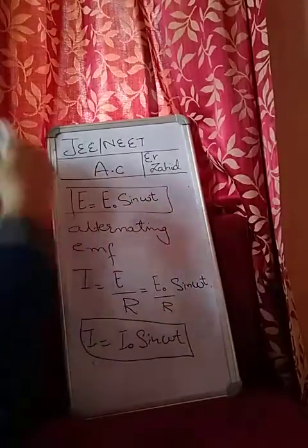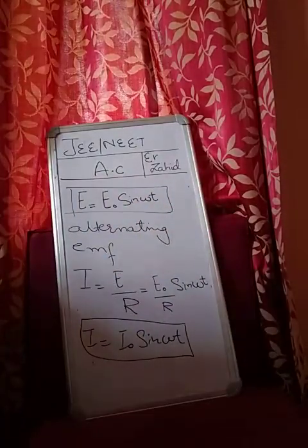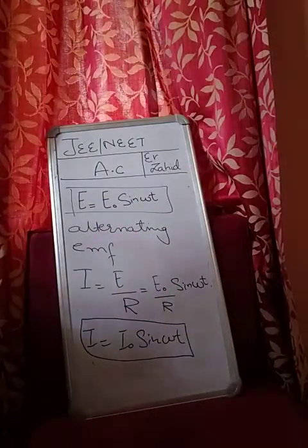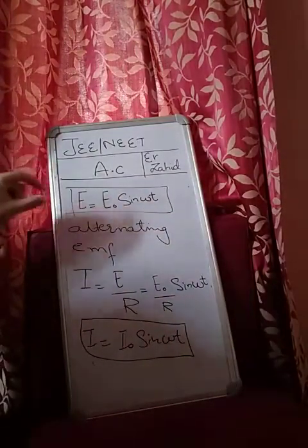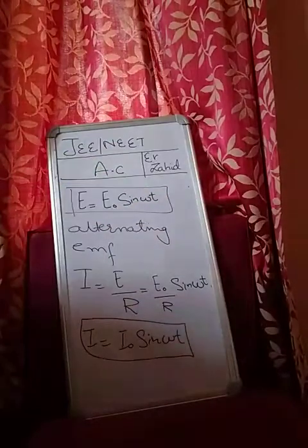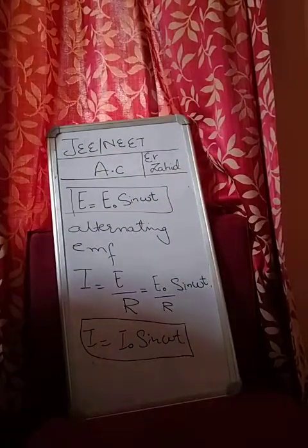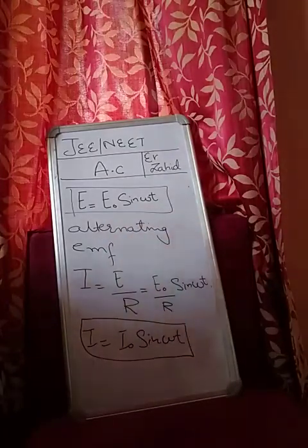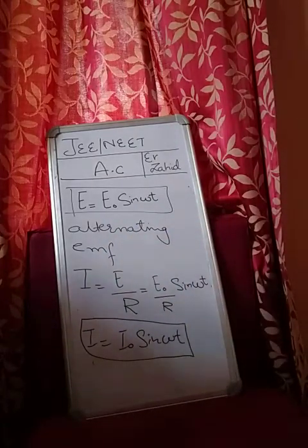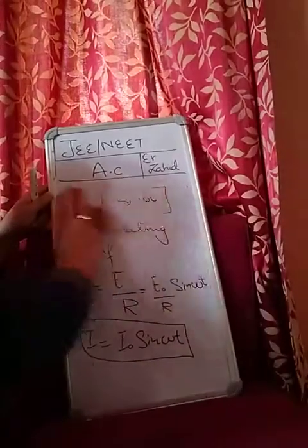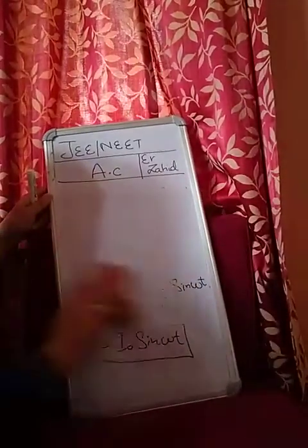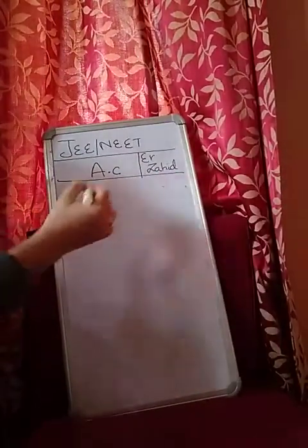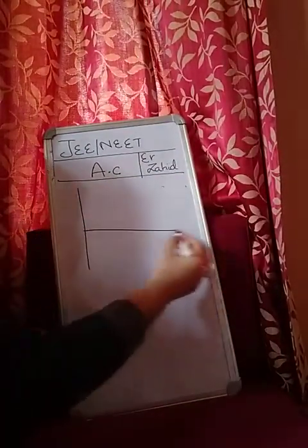But keep one thing in mind: this is called instantaneous value of alternating EMF, this is called instantaneous value of alternating current. This is the EMF at some particular instant of time, this is the current at some particular instant of time. So these are referred to as instantaneous values.